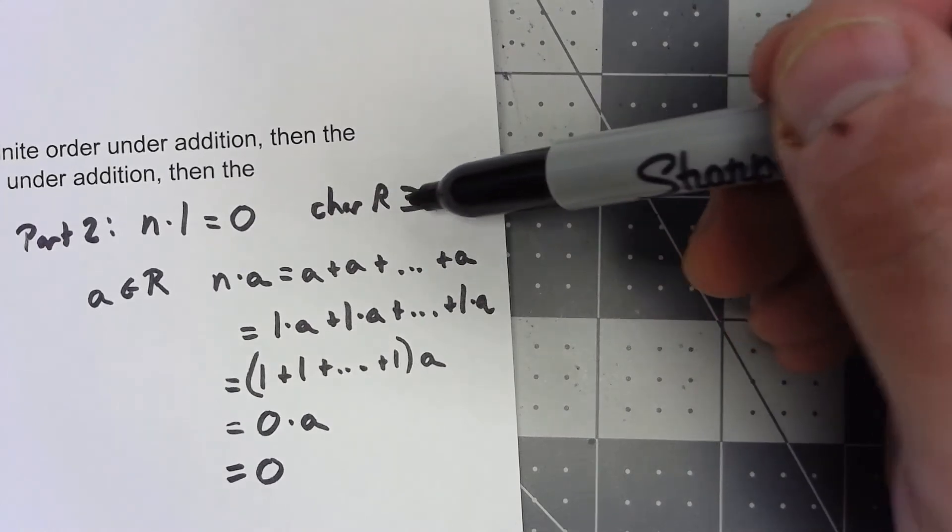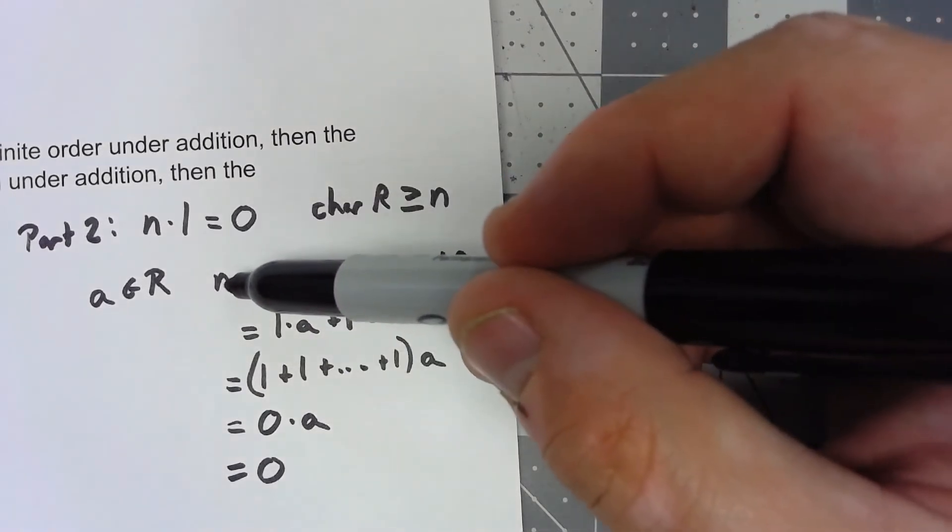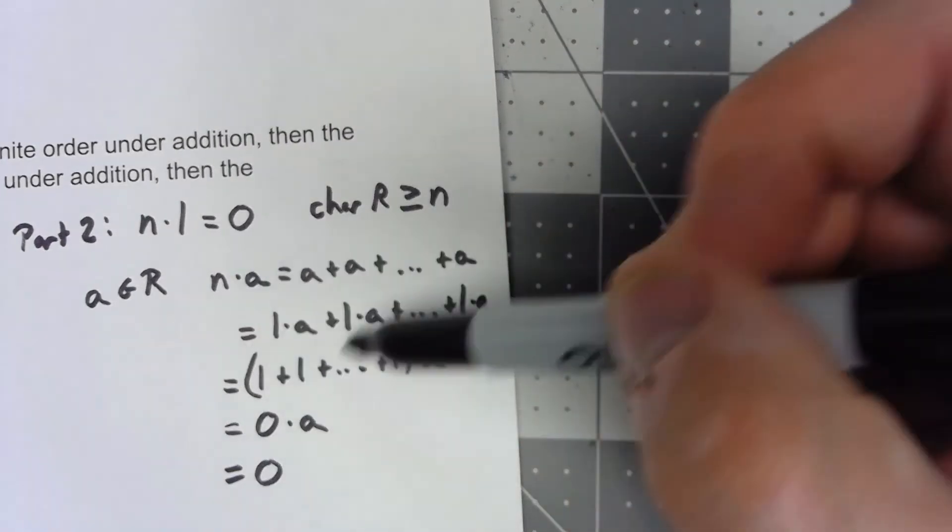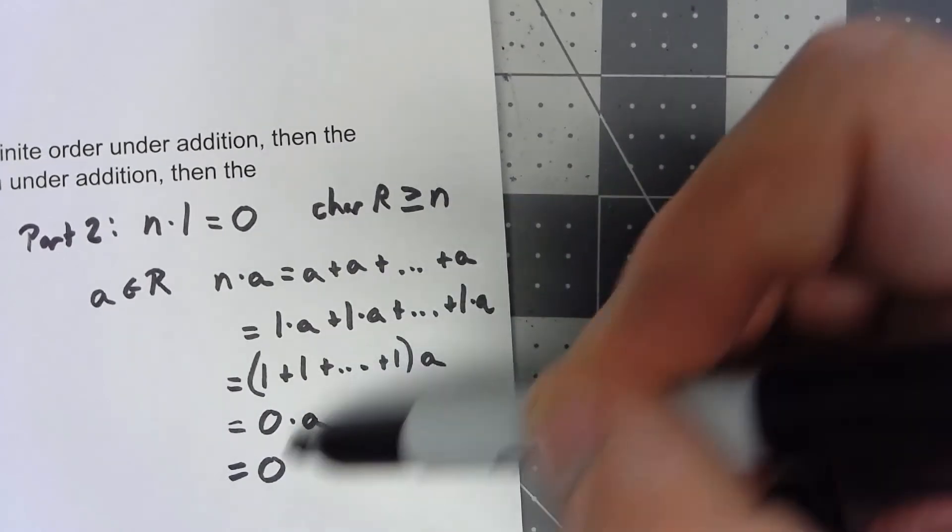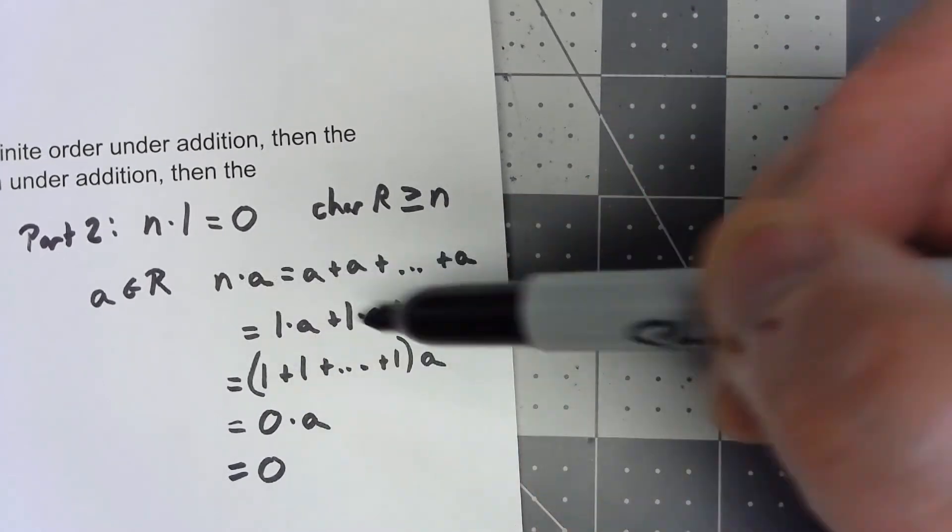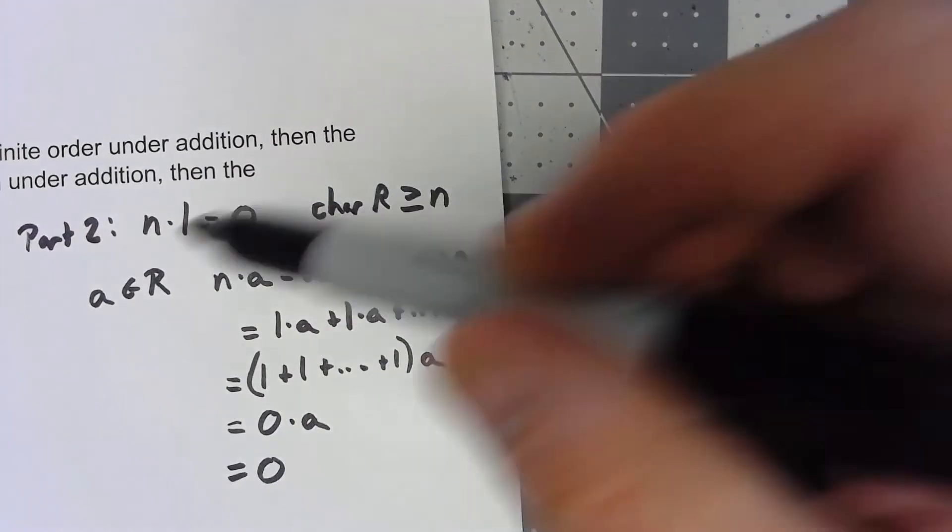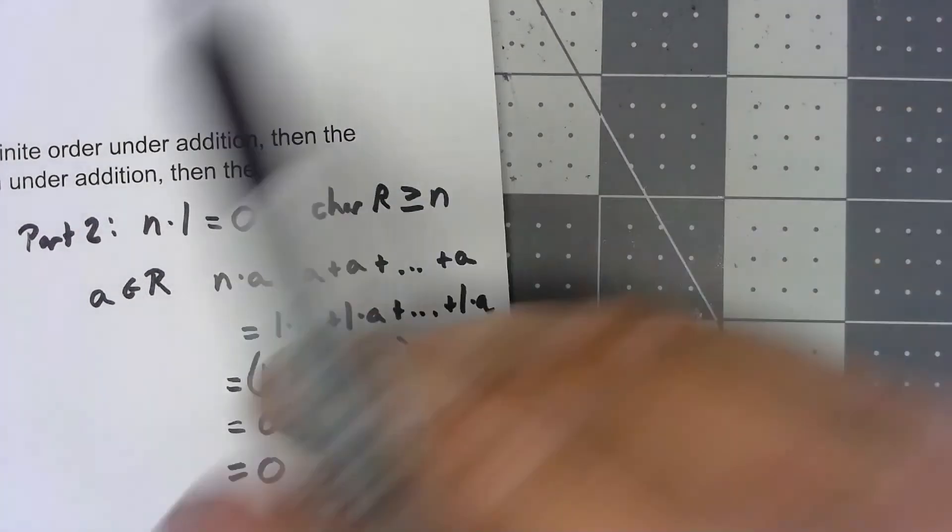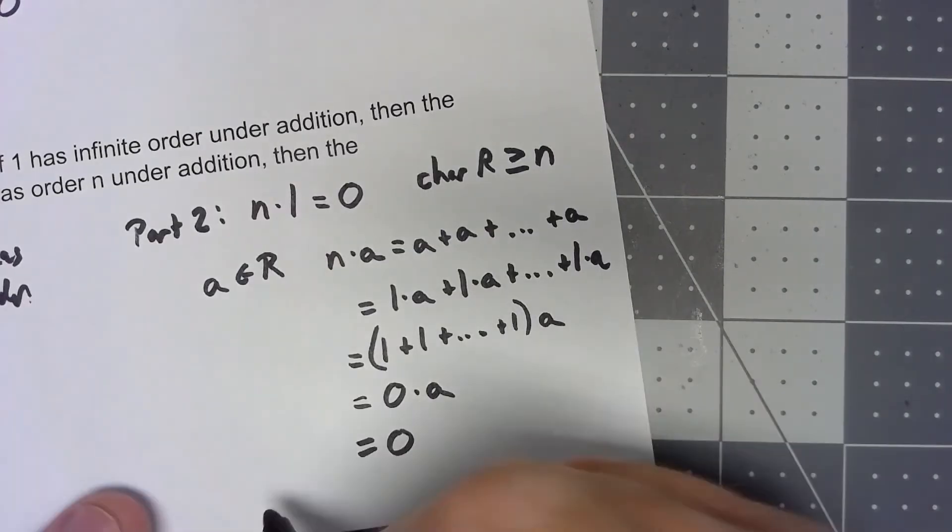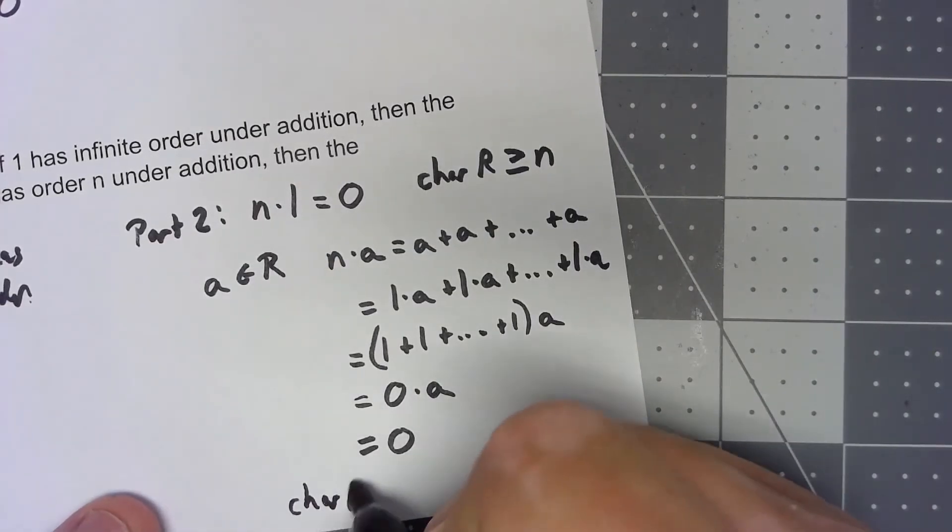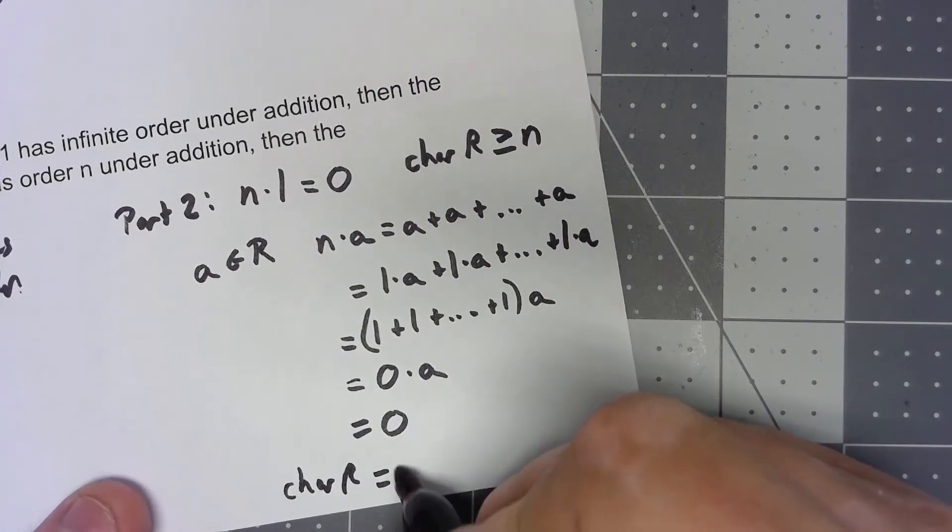So there we are. The characteristic of R—that is, a number n such that any element of this thing, when I take n times that thing gives me 0—the characteristic had to be at least that because that was the smallest number for 1. So the characteristic of R would have to equal n.